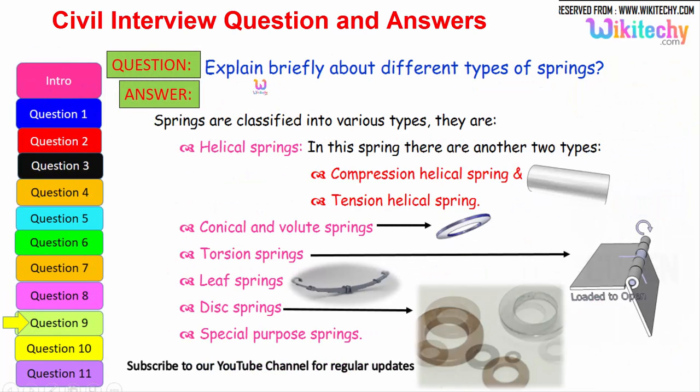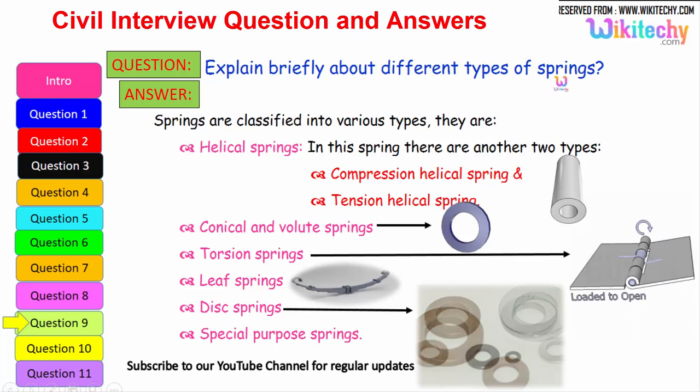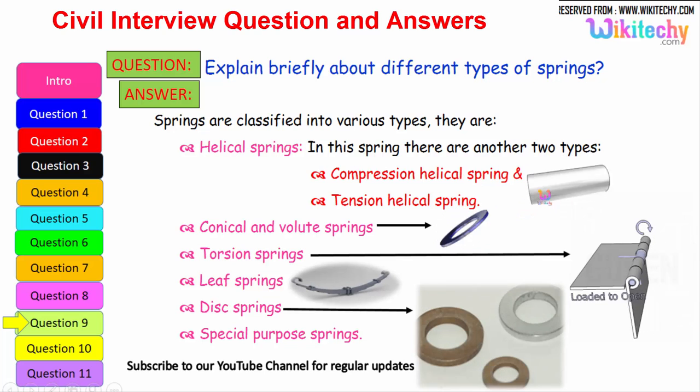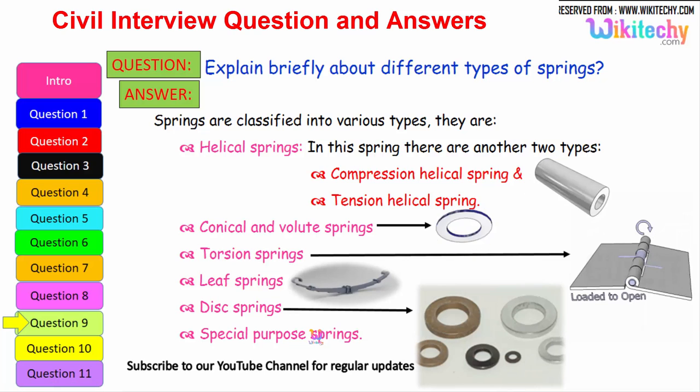Now let us see briefly about the different types of springs. Springs are classified into various types. They are: The first one is helical springs. In these springs there are two types further. One is compression helical springs and the other one is tension helical springs. And the next one is conical volute springs. The other one is torsion springs. Here is the leaf springs. Here is the disc springs. And there are some additional springs which is called special purpose springs. These are all different types of springs available.